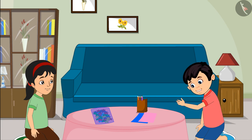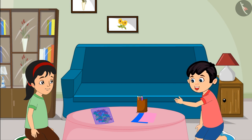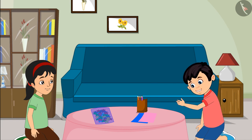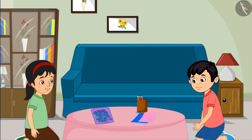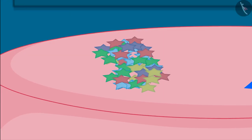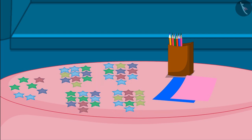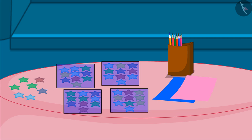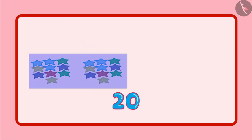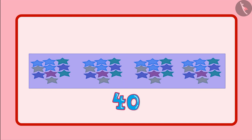Pinky, see, it seems that there are many stars in this packet. Chotu, come on, let us count all these stars. I have divided these stars in 4 groups of 10 each. This means 10, 20, 30 and 40.